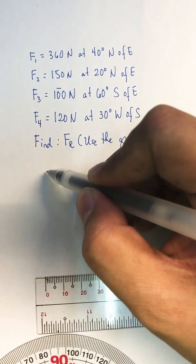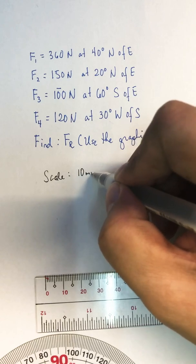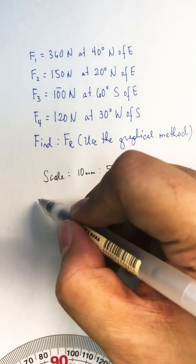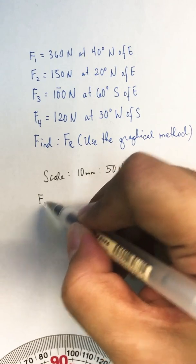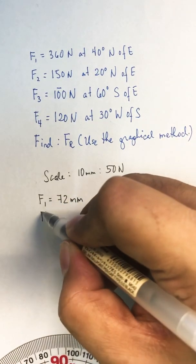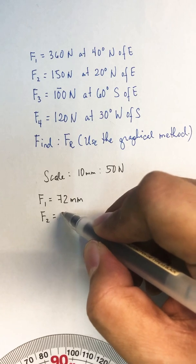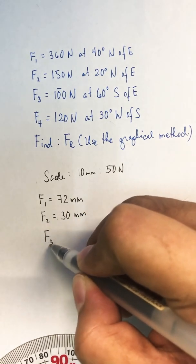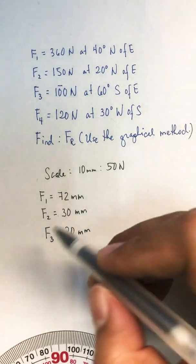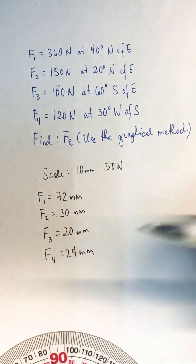The scale we chose yesterday was 10 millimeters to 50 newtons. The next step is to compute the equivalent scale in millimeters. 360 newtons became 72 millimeters, 150 newtons became 30 millimeters, F3 became 20 millimeters, and 120 newtons became 24 millimeters. The directions remain the same.